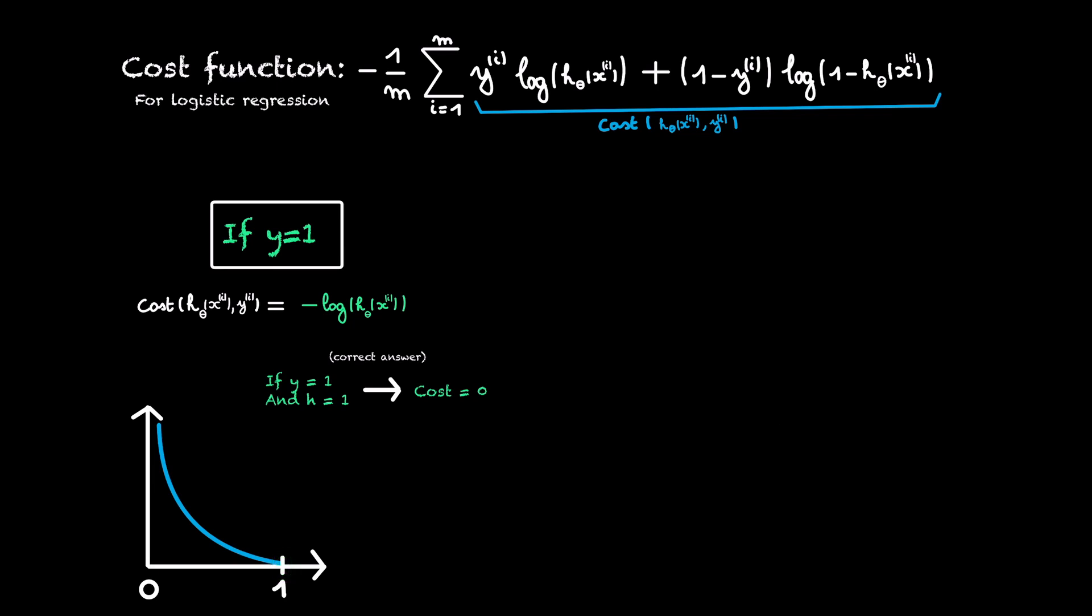But when our hypothesis is 0, while the label is 1, we have an infinite cost. And we give it an infinite value because this captures our intuition of the hypothesis being a probability. Because what we are saying here is that our learning algorithm tells us that the probability of something happening is zero percent. This means it is completely sure it is false. While in fact it's true.